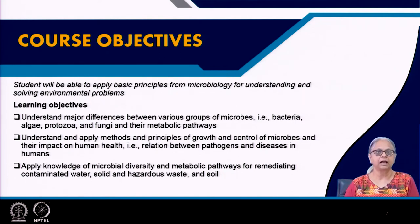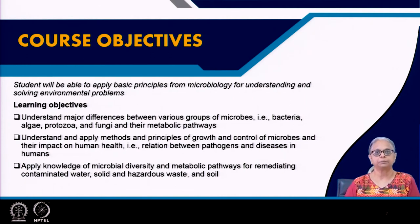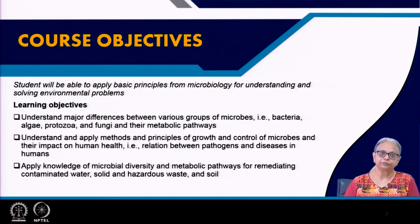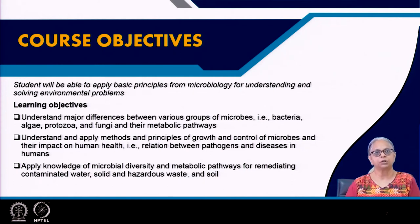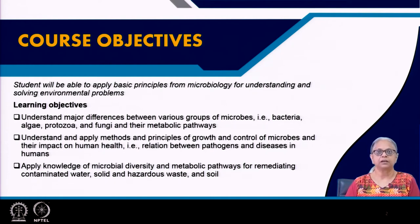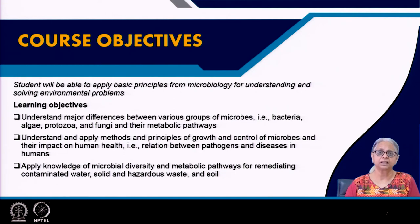These groups include bacteria, algae, protozoa, and fungi. We will look at their metabolic pathways — how these organisms obtain food for generating new biomass as well as energy for their survival. From a biological perspective, all organisms have two objectives: to survive in their environment and to reproduce. Their metabolic pathways determine how they do both.